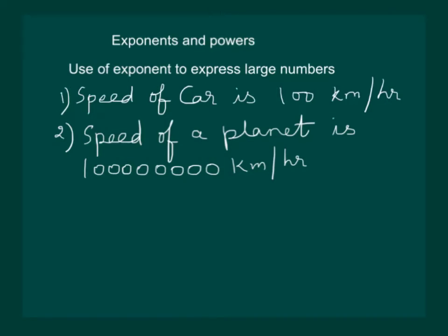But we have another easier method of writing it. We can also write it as 10 to the power of 8 km per hour. Then our second sentence becomes speed of a planet is 10 to the power of 8 km per hour which is much easier for us to read. And later we will learn how it will make our calculations easier.